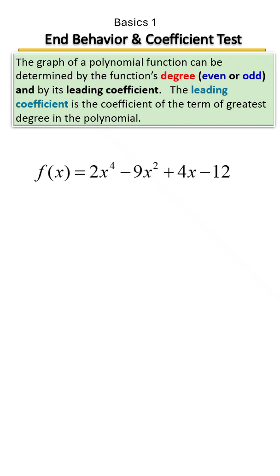In the polynomial example you see below, this is a fourth degree polynomial, so the degree here is four, which is an even number. So this is an even degree polynomial.